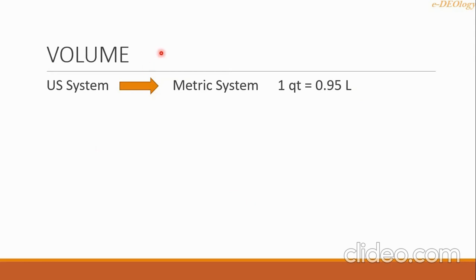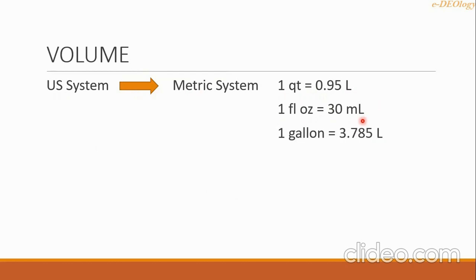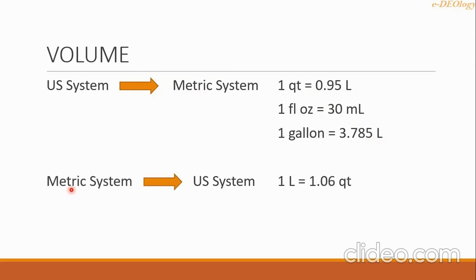Let's go to the volume. From US system to metric system: 1 quart equals 0.95 liter, 1 fluid ounce equals 30 ml, and 1 gallon equals 3.785 liters. From metric system to US system: 1 liter equals 1.06 quart.